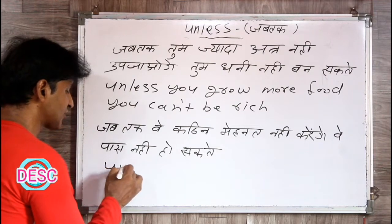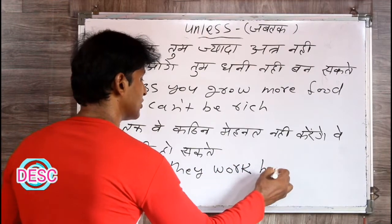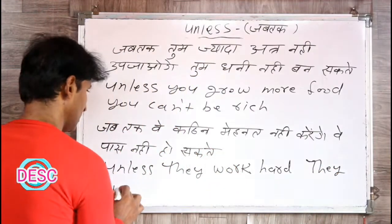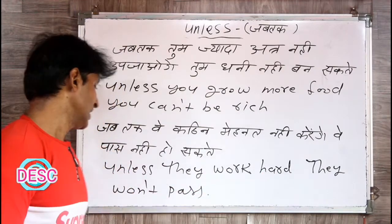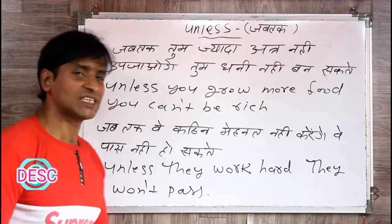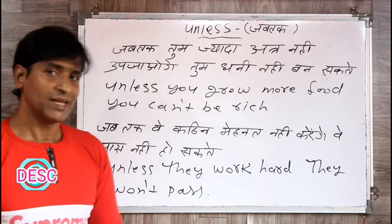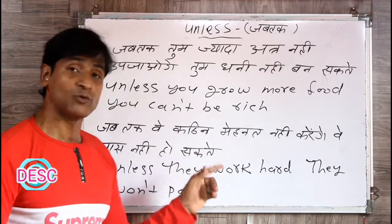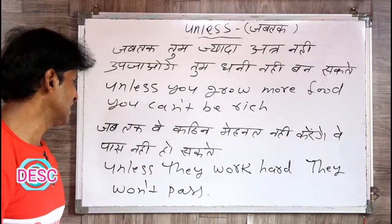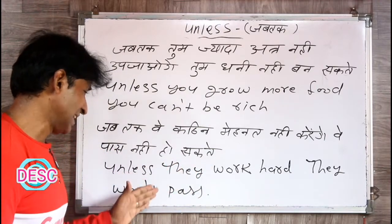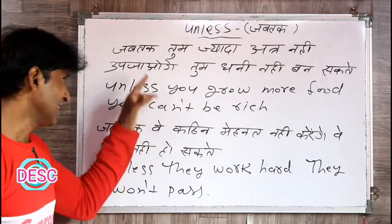If you don't grow more food, you can't be rich. Jab tak vay kathin mehnat nahi karenge, vay pass nahi ho sakte. Unless they work hard, they won't pass. Unless they work hard, they won't pass. He can't pass — friends, this is the meaning. The English sentence means: he won't pass. We can write 'he won't pass' or 'he can't pass'. That was the use of Unless.